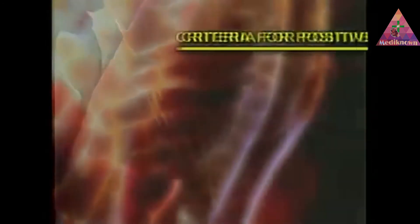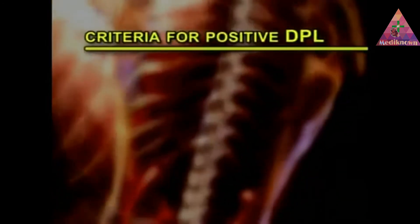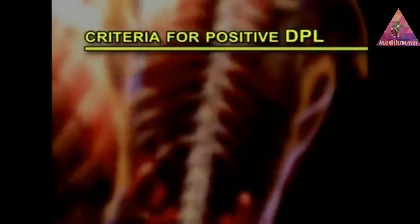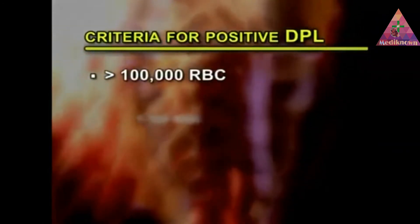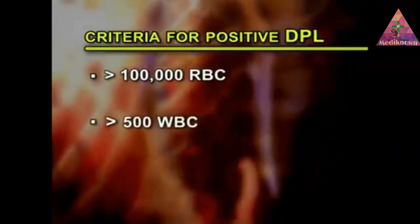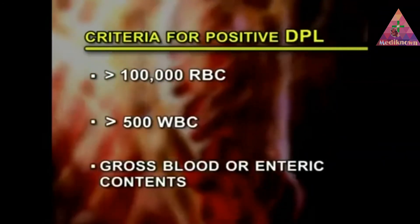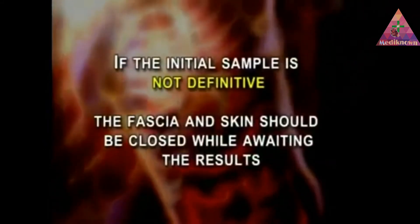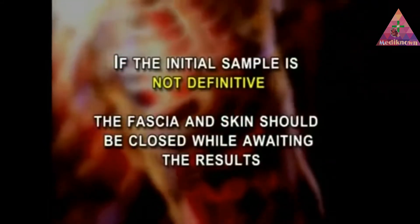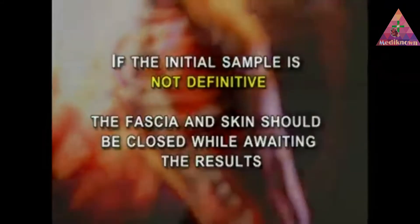The criteria of a positive DPL for blunt trauma are greater than 100,000 red blood cells, greater than 500 white blood cells, or gross blood or enteric contents. If the initial sample is not definitive, the fascia and skin should be closed while awaiting the results.